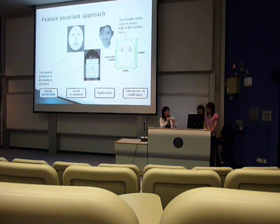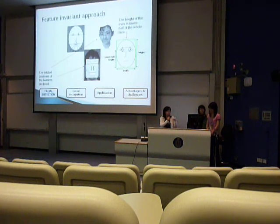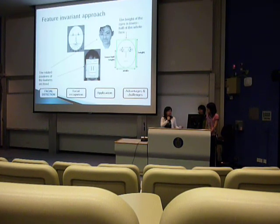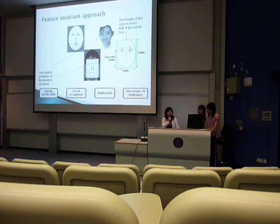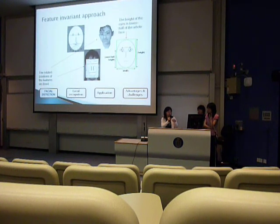The second approach is the feature invariant approach. It aims to find structural features that exist even when viewpoint or lighting conditions vary. Different structural features are used, such as facial local features, texture, shape, and skin color. As we can see in the picture, the relative positions of features are fixed — for example, the height of the eyes is in the lower half of the whole face. Technologies that combine several features of the face are also used to improve detection accuracy.